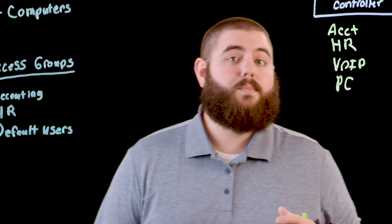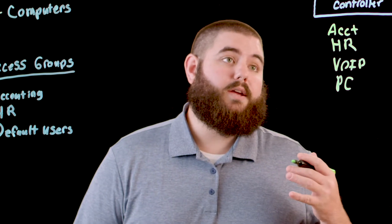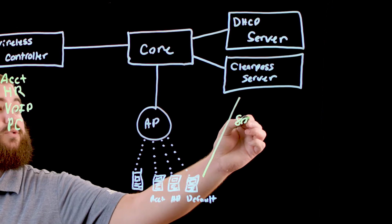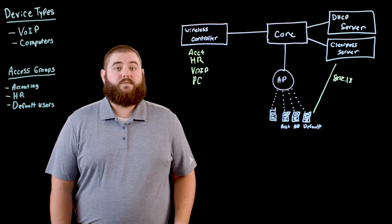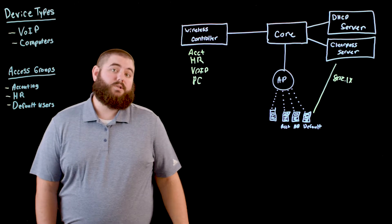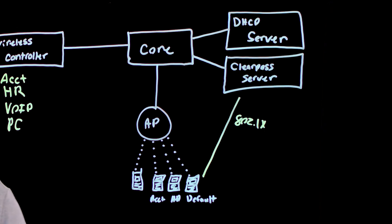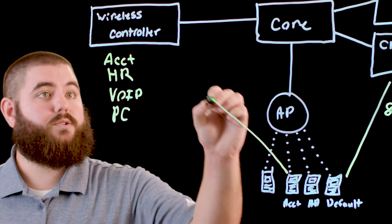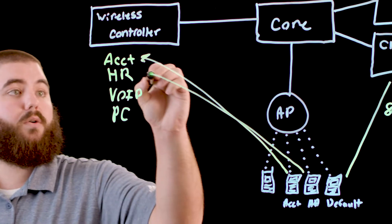Now we can use ClearPass to assign these roles to the end user. So when a device performs an 802.1X authentication to ClearPass, we can retrieve these attributes by simply having Active Directory as the authorization source in ClearPass. Once the device performs its authentication, we can see what department the device user is in, and based on that we can assign an accounting user into the accounting role and the HR user into the HR role.